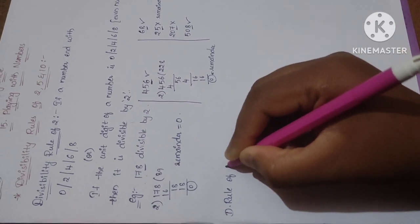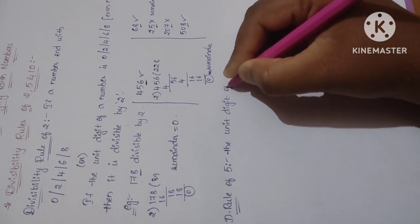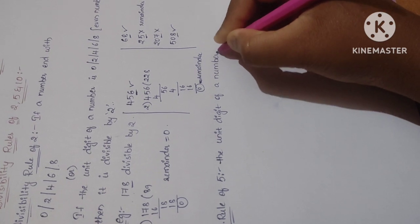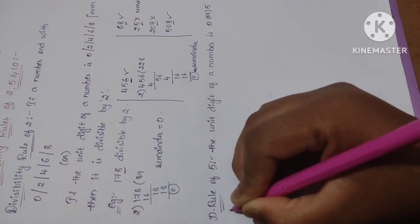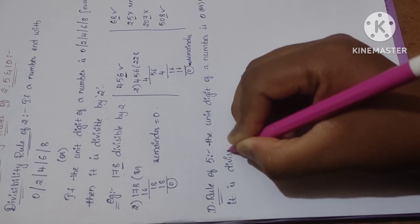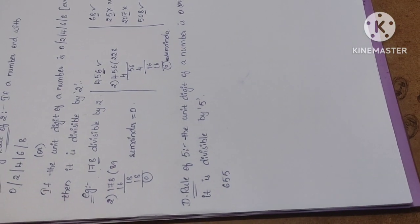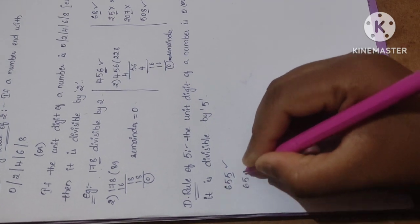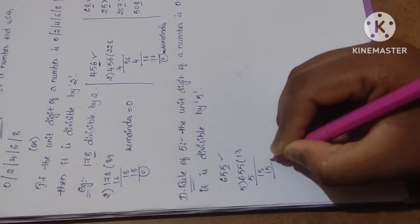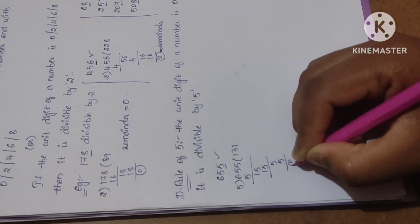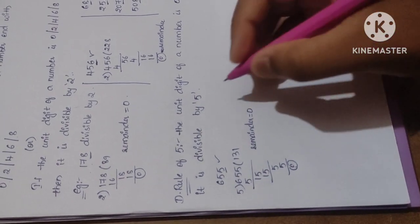Next, the divisibility rule of 5. This is very simple: if the unit digit of a number is 0 or 5, then that number is divisible by 5. Comparing with rule of 2, which has five digits to remember (0, 2, 4, 6, 8), the rule of 5 has only two numbers: 0 or 5. For example, 655 — unit digit is 5, so it is divisible by 5. Cross-checking: 655 ÷ 5 = 131, remainder 0.